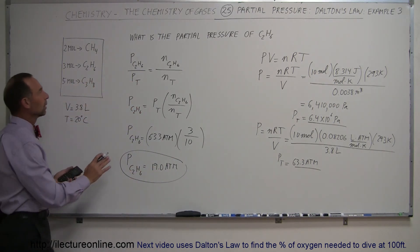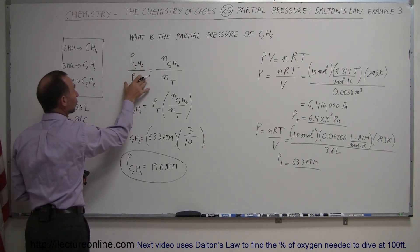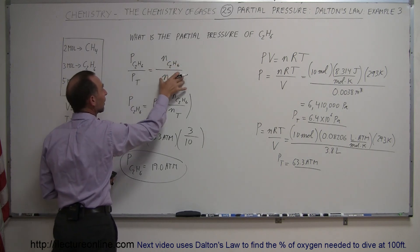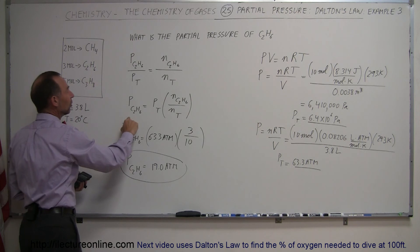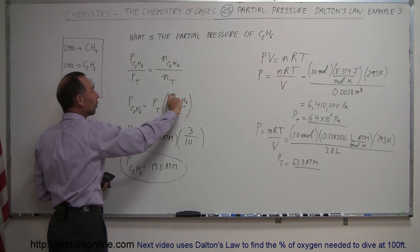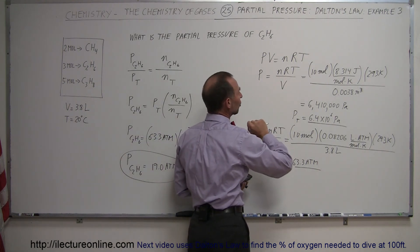We take the ratio of the partial pressure divided by the total pressure as equal to the number of moles of that gas divided by the total number of moles in the mixture. We rearrange the equation, so we take the ratio of the moles times the total pressure. We find the total pressure using the PV equals nRT equation.